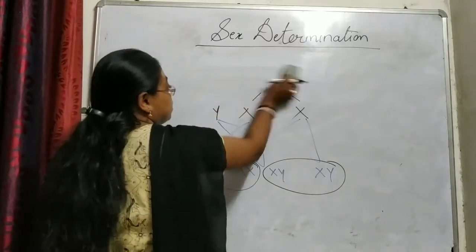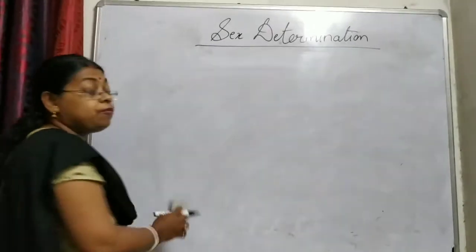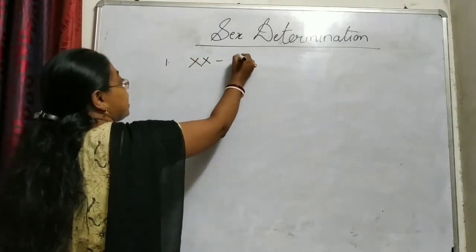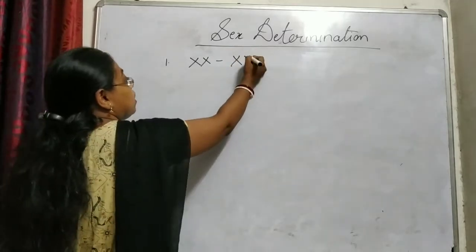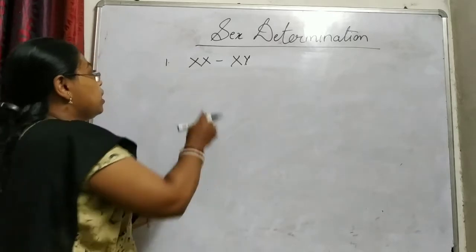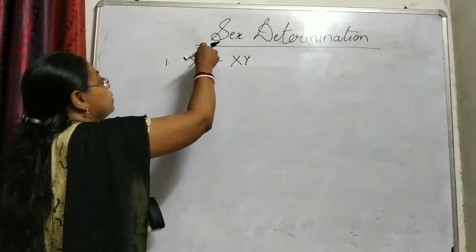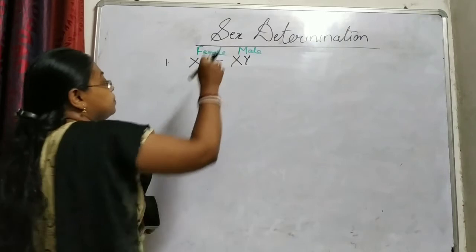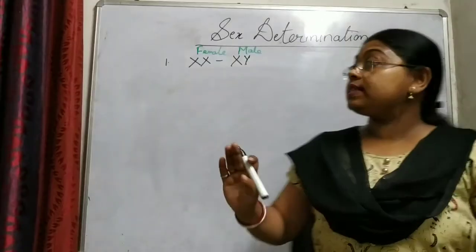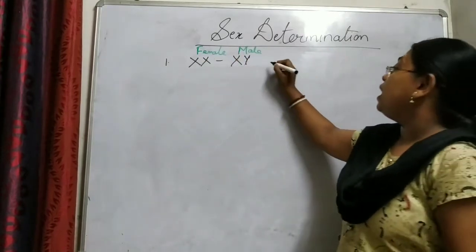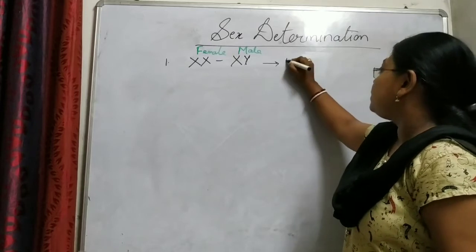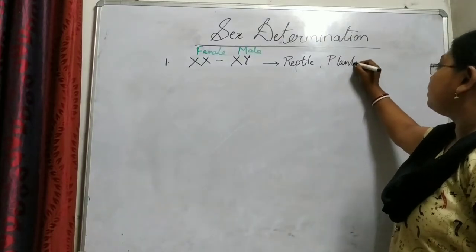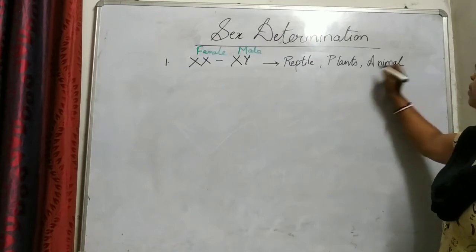When we talk about sex determination patterns, there are basically three varieties. The first is the XX and XY system. XX is female and XY is male. This type of system — XX in female and XY in male — is found in reptiles, plants, animals, and mammals.